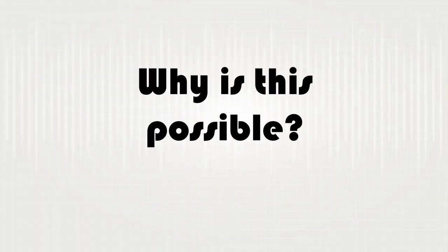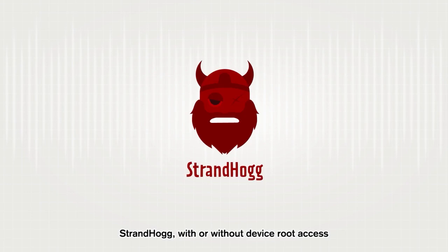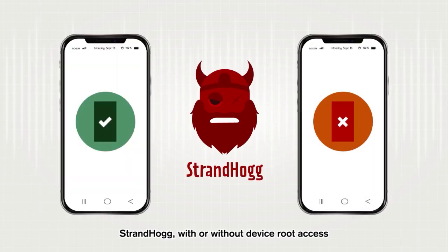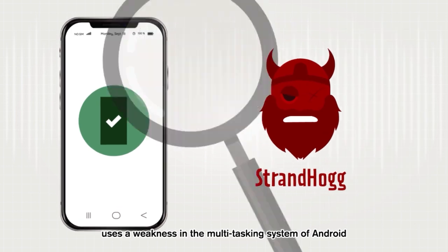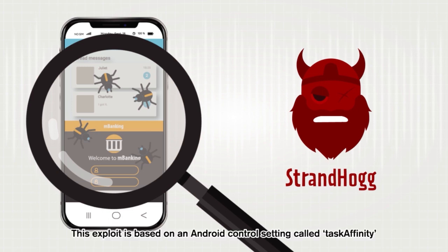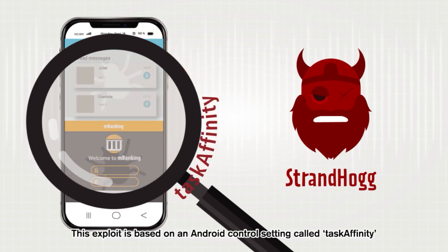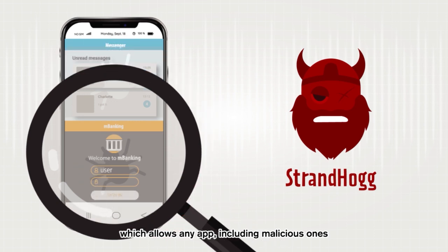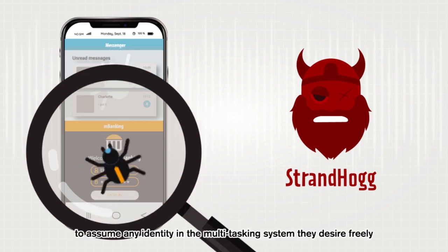Why is this possible? StrandHog, with or without device root access, uses a weakness in the multitasking system of Android to enact powerful attacks that allow malicious apps to masquerade as any other app on the device. This exploit is based on an Android control setting called Task Affinity, which allows any app, including malicious ones, to assume any identity in the multitasking system they desire freely.